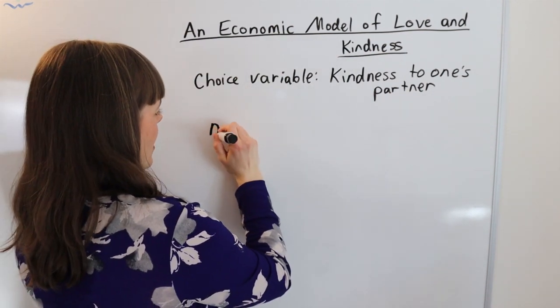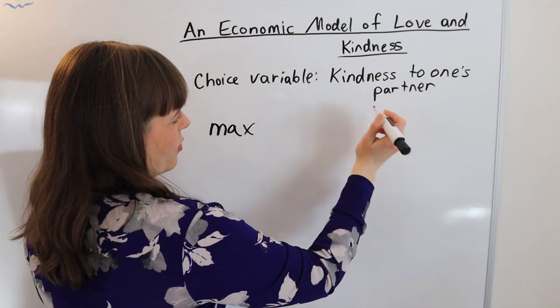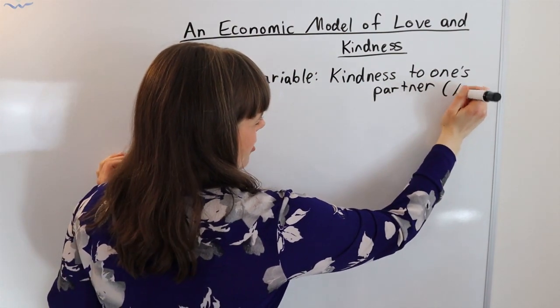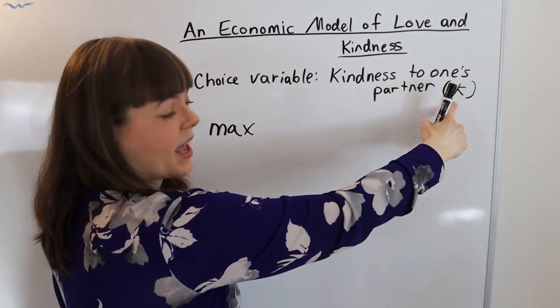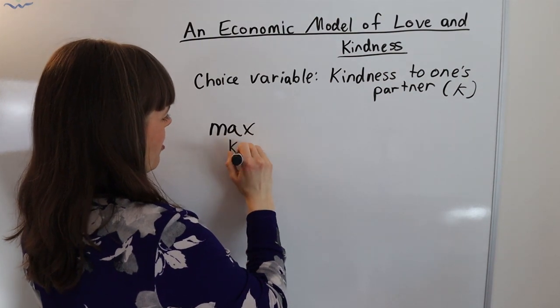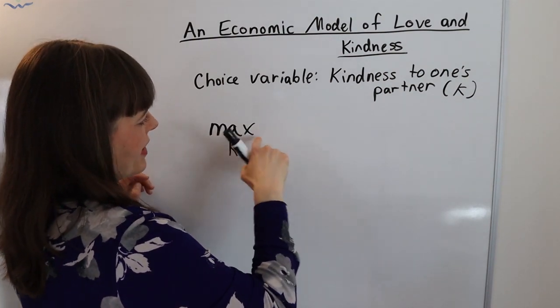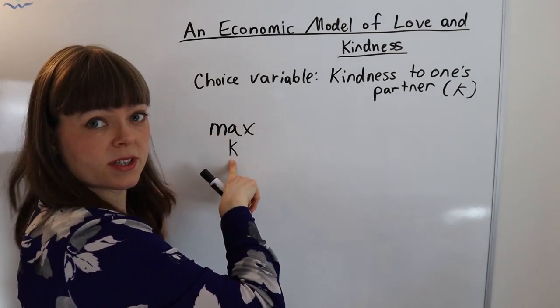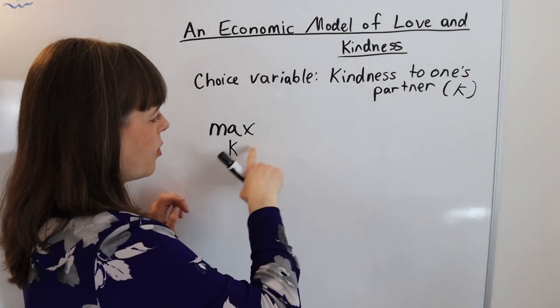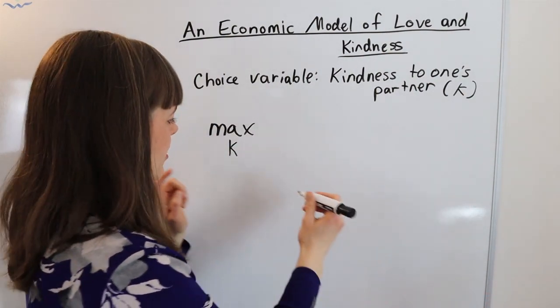Now I'm going to set up the optimization problem. So kindness towards one's partner I'm going to define that as K. That's the choice variable. In which case we're maximizing an objective function by choosing kindness. So we need to figure out what are the benefits and the costs.